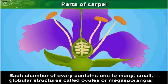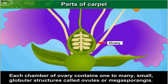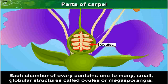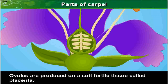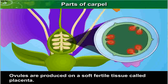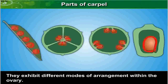Each chamber of the ovary contains one to many small globular structures called ovules or microsporangia. Ovules are produced on a soft, fertile tissue called placenta. They exhibit different modes of arrangement within the ovary.